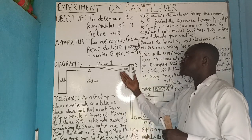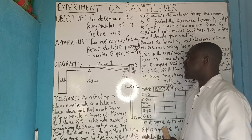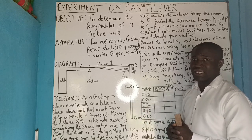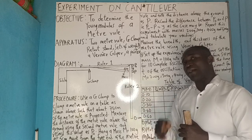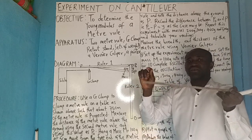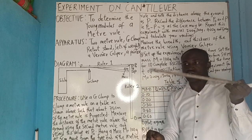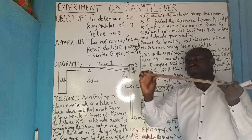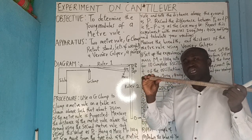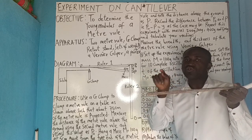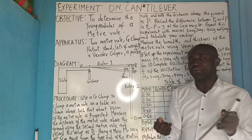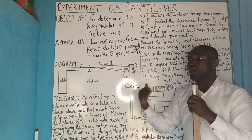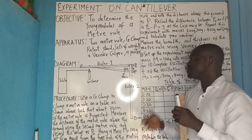We are applying the principle of bending to see how flexible or stiff the meter rule is, and from what we get, we will check our answer. Applying the principle of oscillation means the meter rule will oscillate — moving up and down. Ensure you do not stretch it too much, as a large amplitude makes it hard to count 10 oscillations accurately.